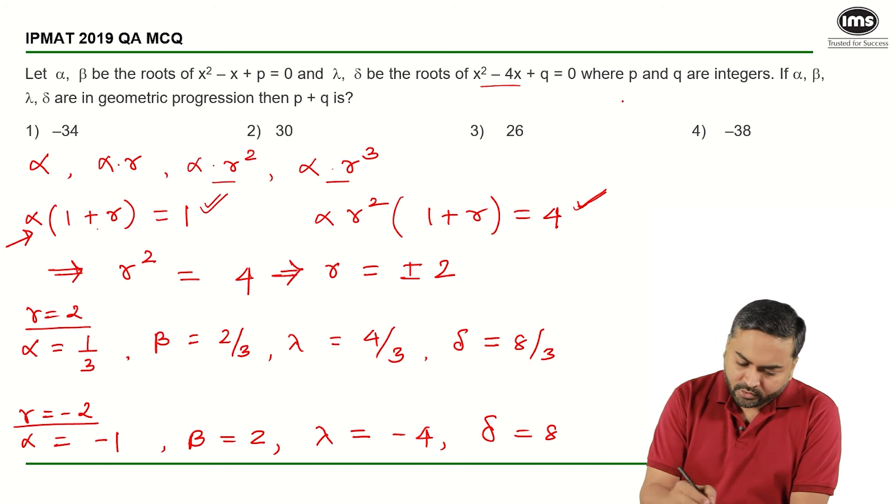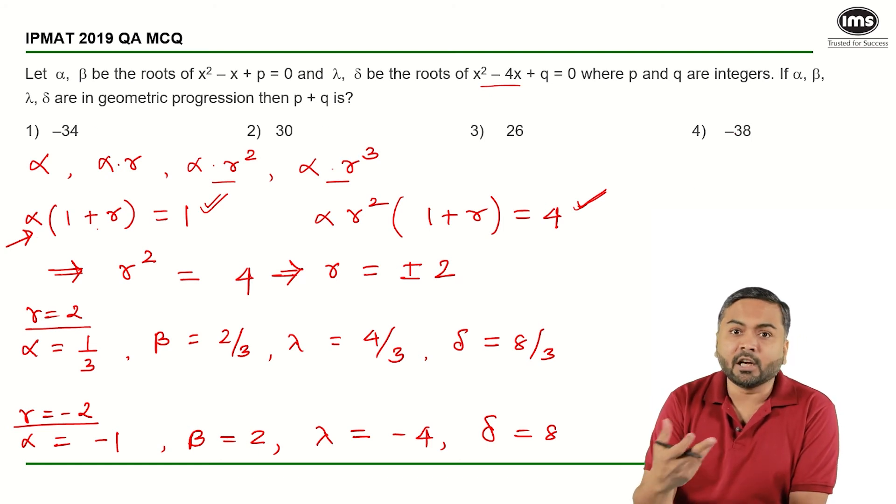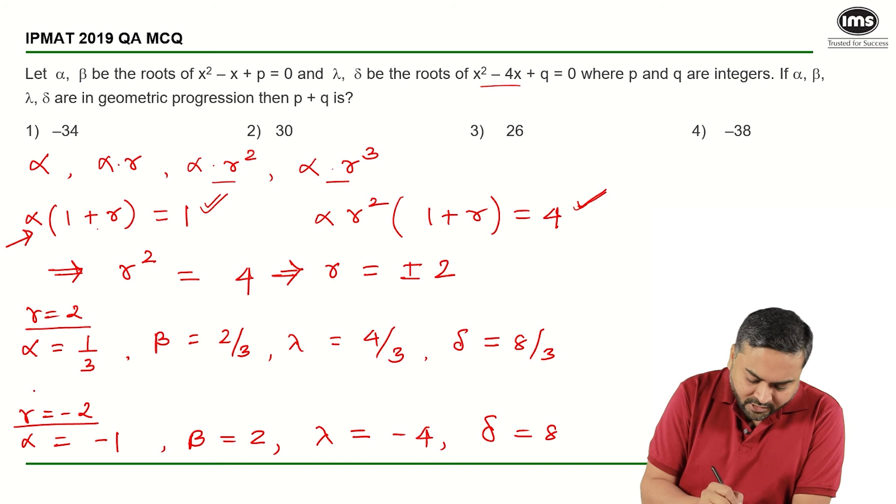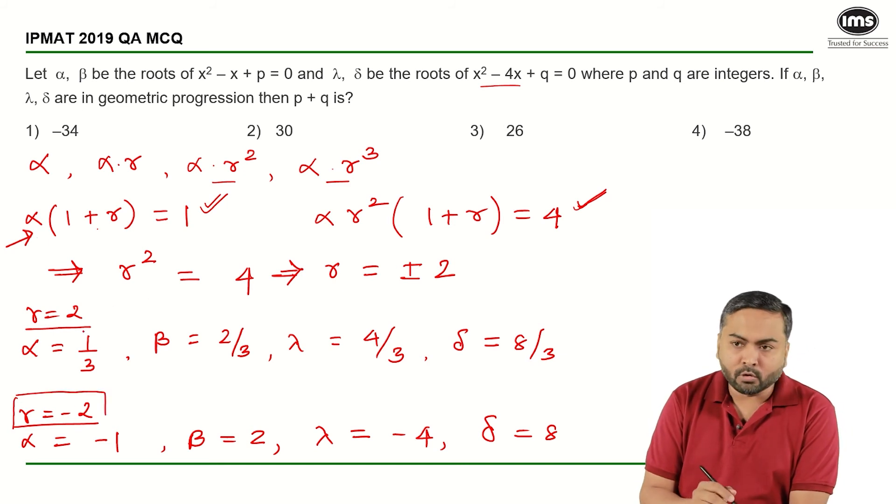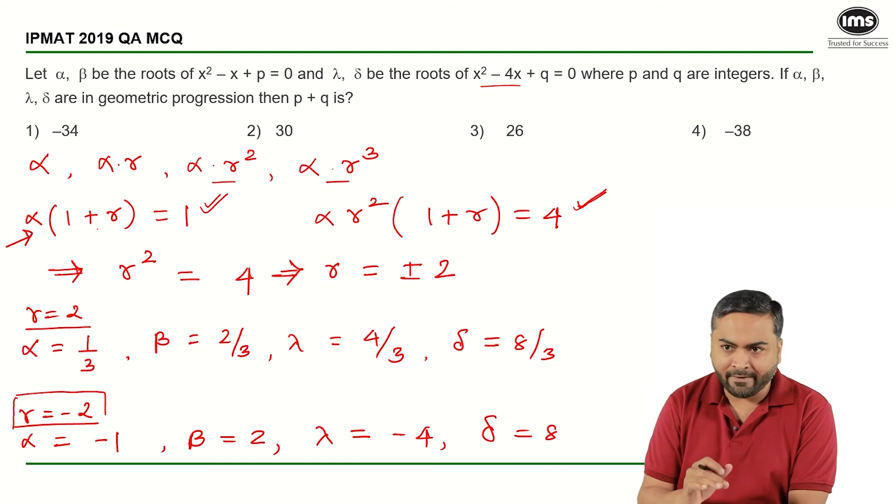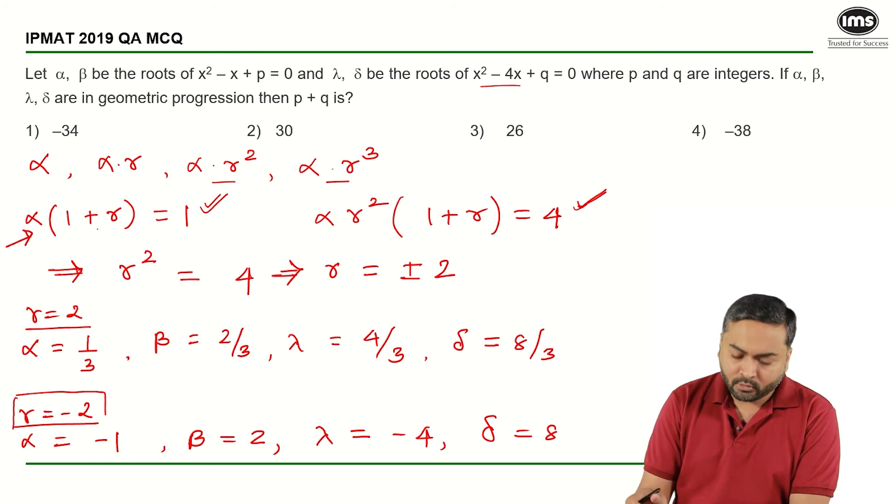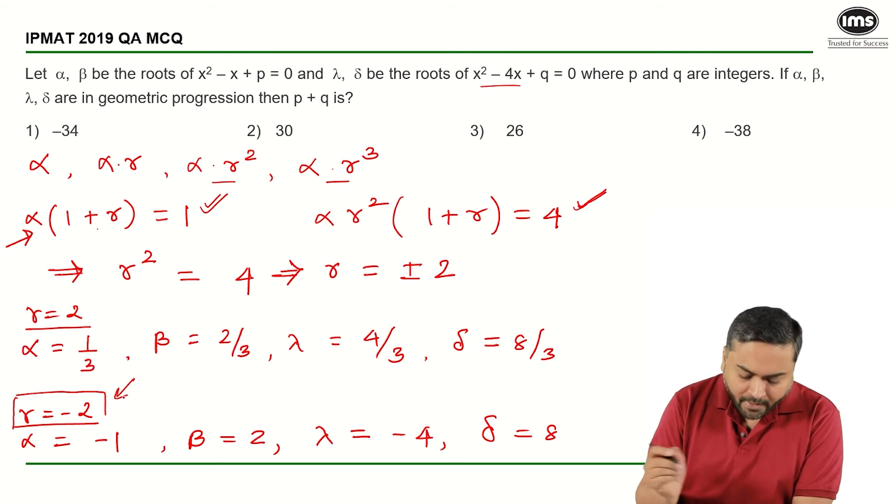Since all the options are integral values, I will straight away start with R is equal to minus 2, because R is equal to 2 gives all the roots with denominator 3. So let me directly start with R is equal to minus 2.